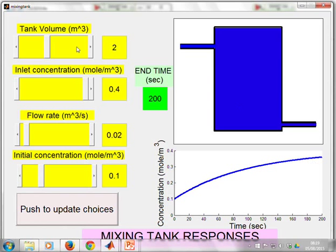Now what I could do next is I could say, let's try changing the tank volume. So now the tank volume is 3 but I've not changed anything else. So if I push to update the choices, what impact has that had? And you see the concentration changes more slowly, but it's going to get to the same steady state.